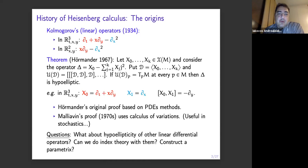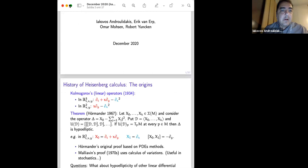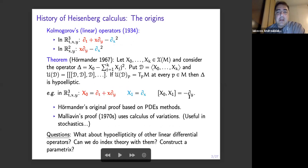In the first example, you can see the vector fields involved — it's the red one and the blue one — and just notice that the Lie bracket gives you dy. And then Maliavin gave a second proof in the 70s using calculus of variations, which I think is in fashion today in stochastics, but I will not speak about this today.